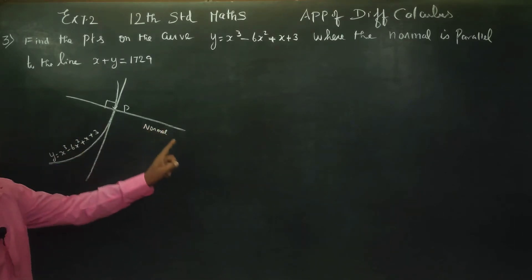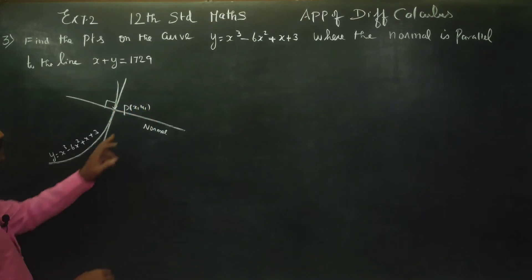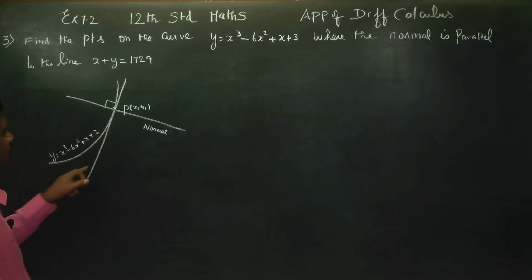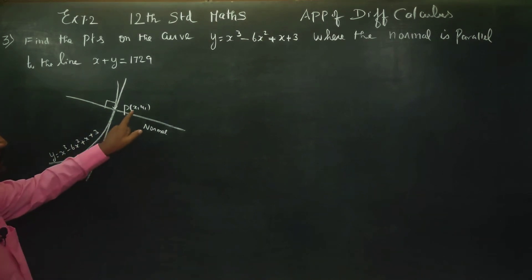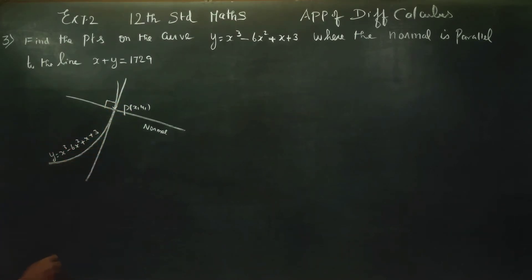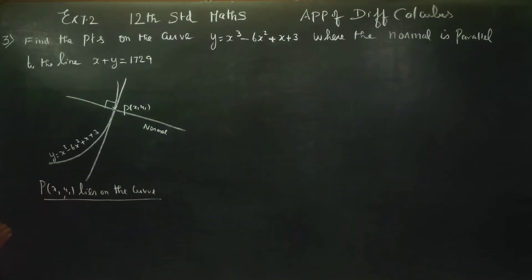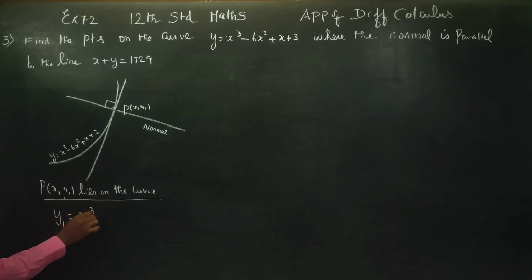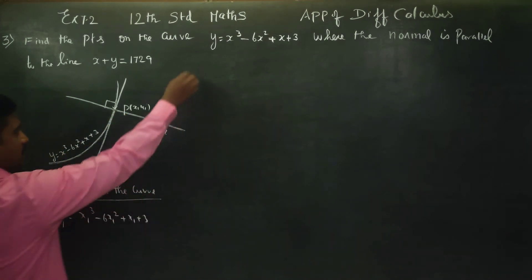At a point (x1, y1) on the curve, the tangent is drawn. Since point (x1, y1) lies on the curve, we substitute it into the curve equation: y1 is equal to x1 cube minus 6x1 square plus x1 plus 3. This is our first result.